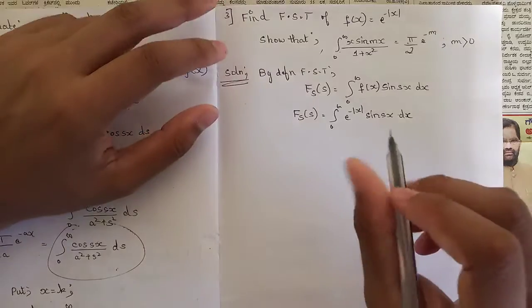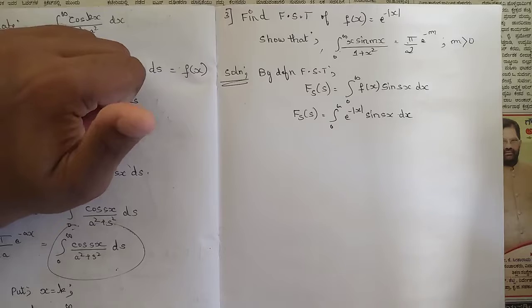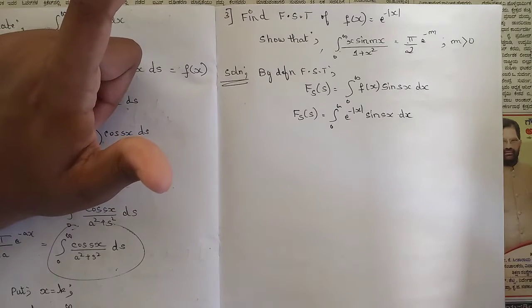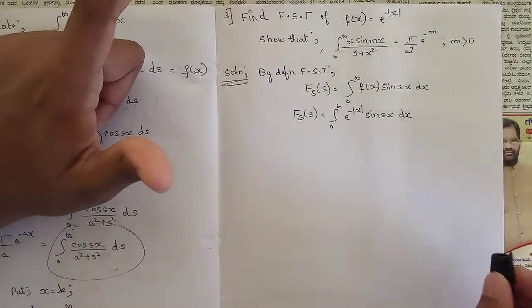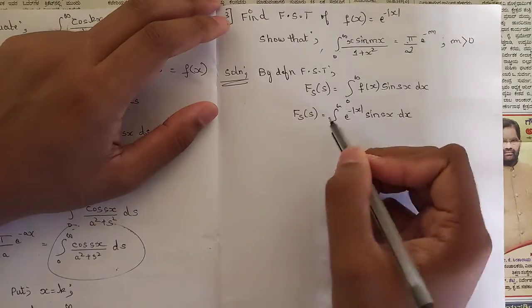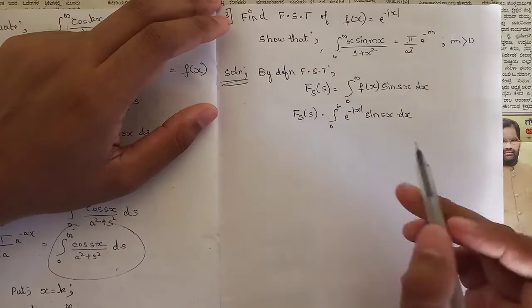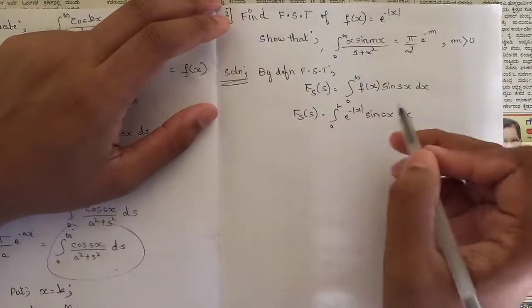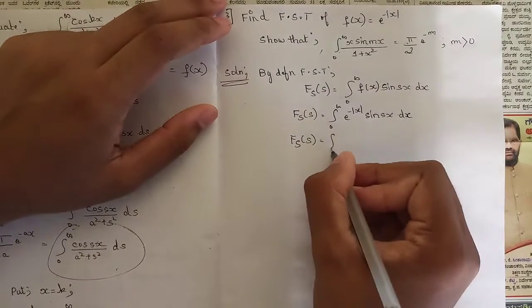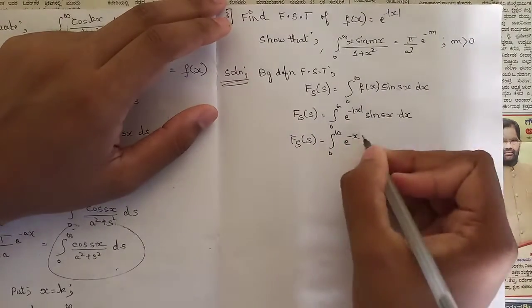For |x|, we know there are two cases: minus x when x is negative (i.e., x lies between minus infinity and zero), and plus x when x is positive. But in the definition the integral already runs from zero to infinity, so x is positive. We can directly write it as e^(-x).